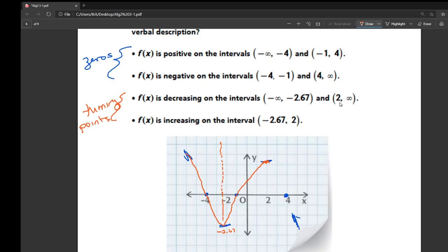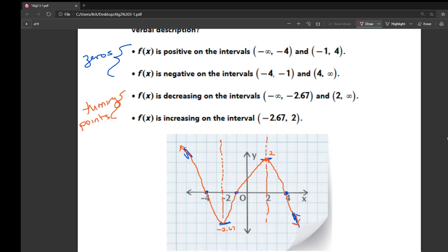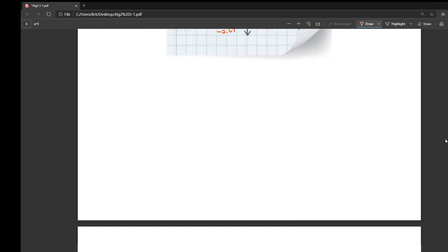And then it says that it's decreasing from 2 to positive infinity. So it's going downhill from there to there. So that gives you the basic shape. And there's our little turning points. We know that we have a turning point at 2. So it's not too bad.